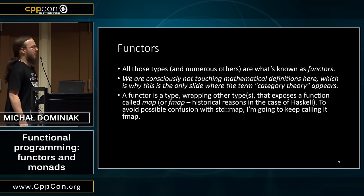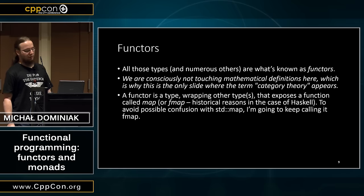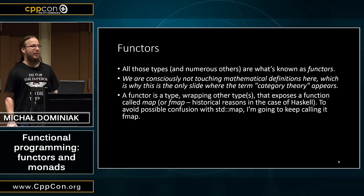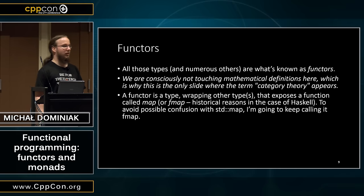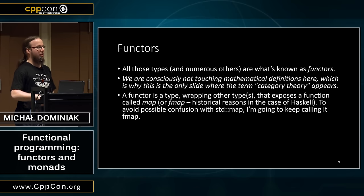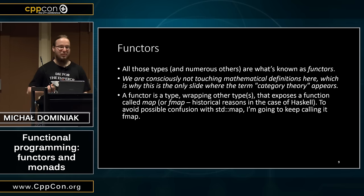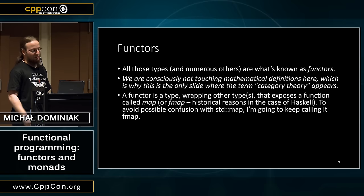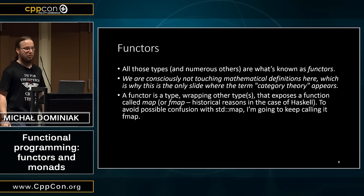So why is it called fmap? Because we're clearly just mapping a function onto a value or more values. It's called fmap because Haskell doesn't support overloading. In very early versions there was a function called map, which was basically fmap on lists. But since that was shipped they couldn't change it. I will keep using fmap since it's easy to distinguish from standard map.